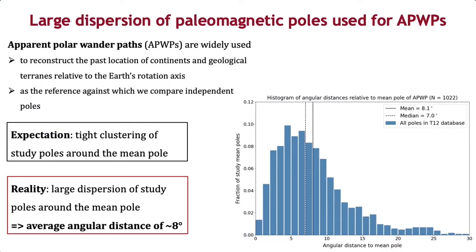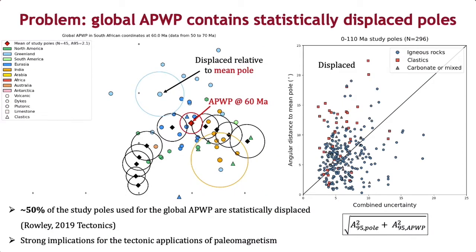For example, in the global APWP of Torsvik and others, we observe an average angular distance of about eight degrees relative to the mean pole. Importantly, some of these study poles are at such a large distance from the mean pole that they are in fact statistically distinct from the mean pole, as is the case for the examples highlighted in this figure.